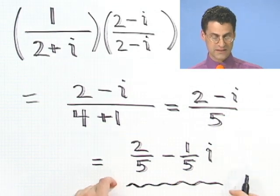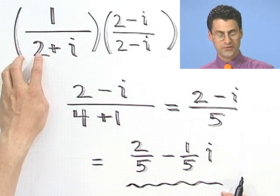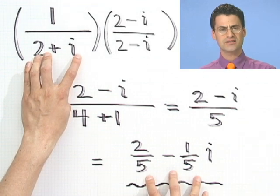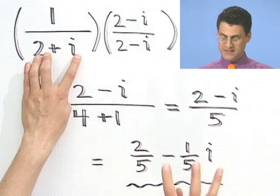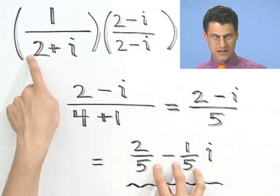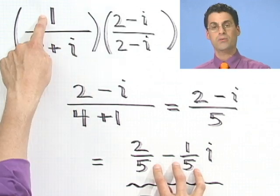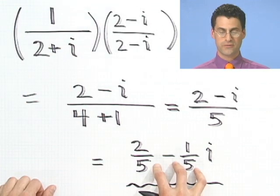So the reciprocal of 2 plus i is this. That's sort of weird. What that means is if I take this number and multiply it by 2 plus i, I should get 1 because this is the flip of this. And you do, and you can work it out and try it yourself.